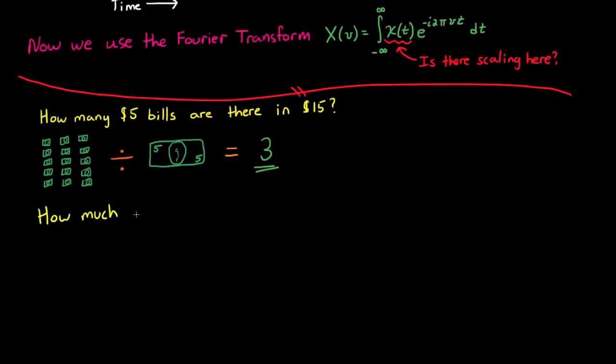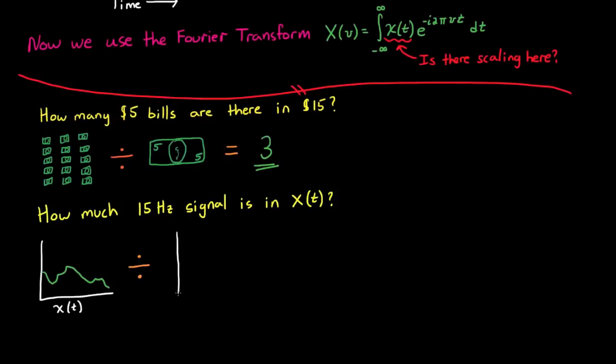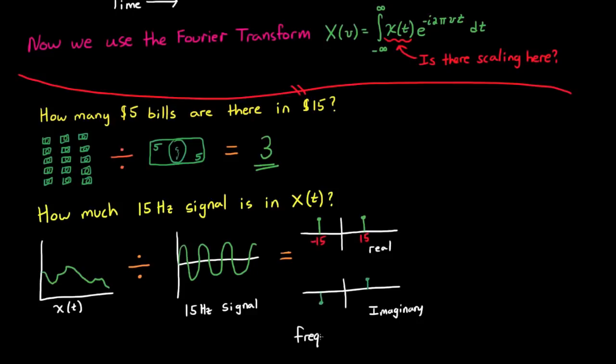But can we extend this analogy of division to help us understand the Fourier transform? For example, how much 15 Hz signal is there in a particular time domain signal? Well, extending the analogy, we would just divide the time signal by that sinusoid, and you'd be left with the answer in the frequency domain. So let's see if that's true.